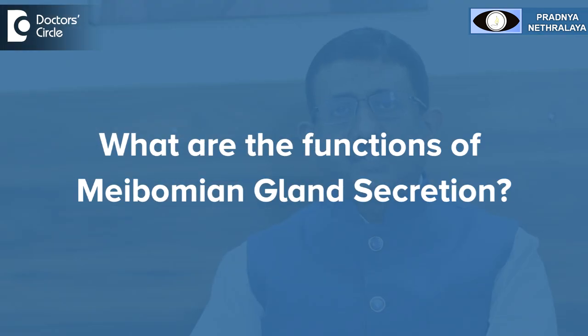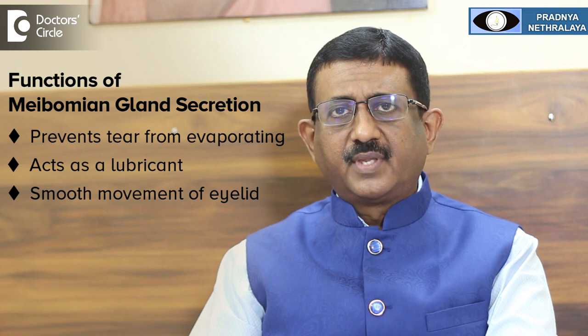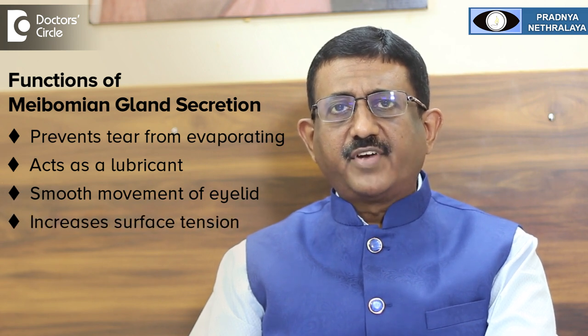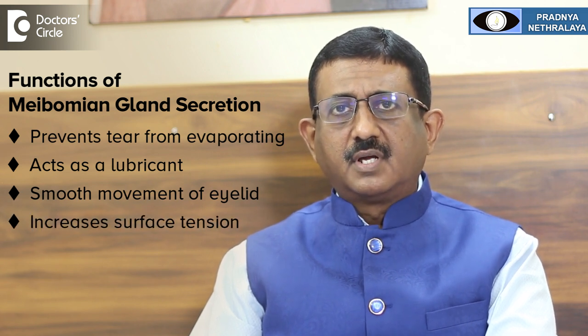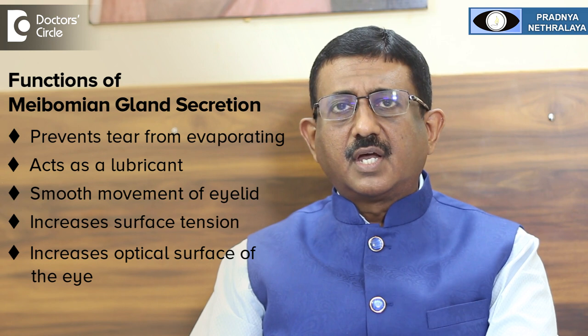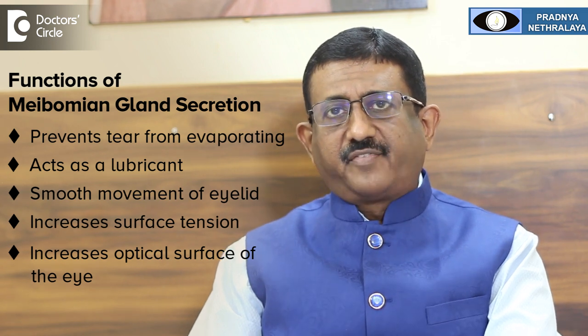What are the functions of Meibomian Gland Secretion? First, it helps in preventing the tears from evaporating. It acts as a lubricant, helps in the smooth movement of the eyelids. It increases the surface tension and it increases the optical surface of the eye to give a crisp vision.